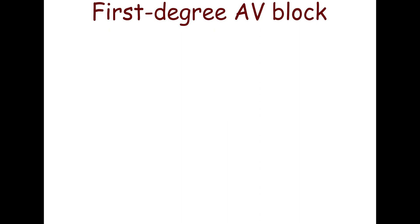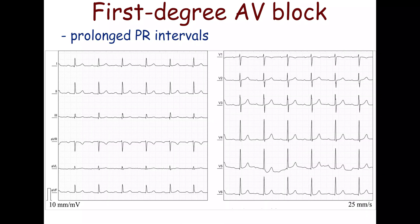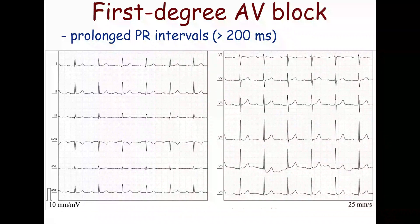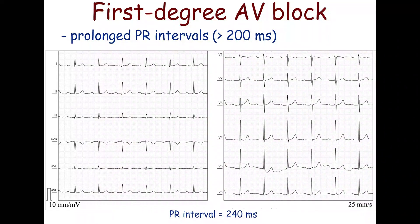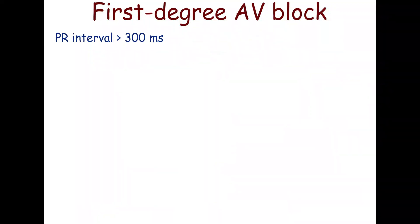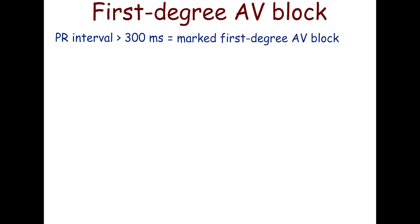First-degree atrioventricular block is characterized by prolonged PR intervals. The PR interval is greater than 200 ms. On this ECG, the PR interval is 240 ms. Prolongation of the PR interval to 300 ms or more is called a marked first-degree atrioventricular block.